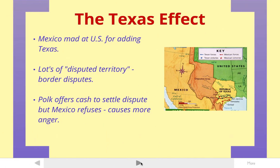So last week, we looked at Texas and how the Republic of Texas gained its independence from Mexico. And Texas is still an issue in the Mexican-American War. Texas wants to join the United States and eventually does in the mid-1840s. And Mexico becomes very mad at the United States for adding Texas. Remember, there's lots of disputed area in Texas, and Mexico actually doesn't even recognize Texas as leaving and being its own country.